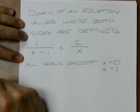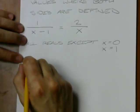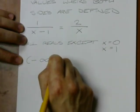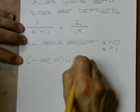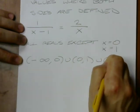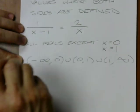So everything but these two, which I could also rewrite as everything from negative infinity to 0, 0 to 1, and 1 to infinity.